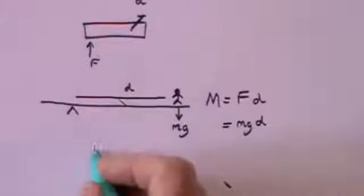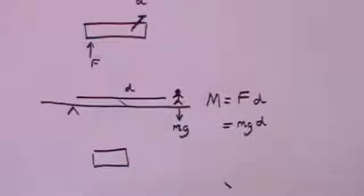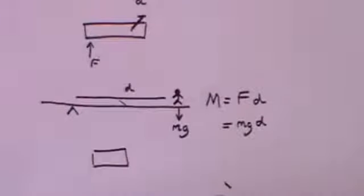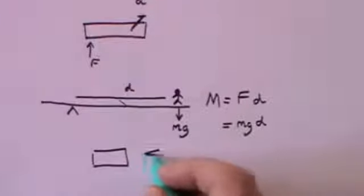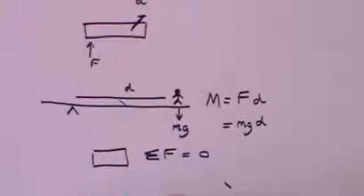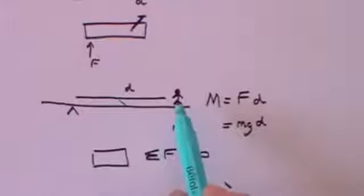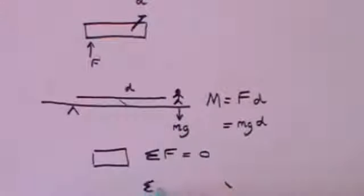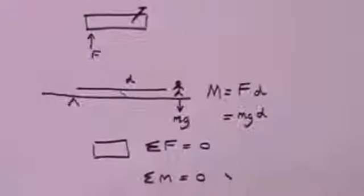Now if you have an object which is either at rest or travelling with uniform motion, that means that there is no net force on it. So the sum of all forces must be zero if there is no acceleration. And it is also true that if there is to be either no movement or no acceleration, the sum of all moments must be equal if you're going to have equilibrium.